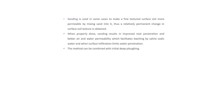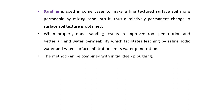Sanding is used in some cases to make fine-texture surface soil more permeable by mixing sand into it, resulting in relatively permanent changes in surface soil texture. When properly done, sanding results in improved root penetration and better air and water permeability, which facilitates leaching by saline-sodic water. This method can be combined with initial deep plowing for greater advantage.